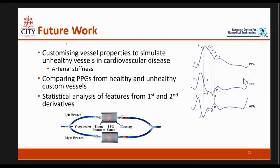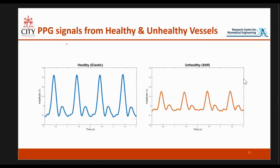Since then, we have also done some further experiments, which I'm excited to share. As a sneak peek — by changing the silicone mixture, we created one vessel that was made more stiff to simulate arterial stiffness, and we could clearly see the difference in the PPGs. We're excited to analyze this further, extract features, and see if we can quantify arterial stiffness, detect cardiovascular disease, and screen for cardiovascular diseases early on.